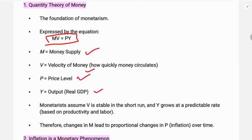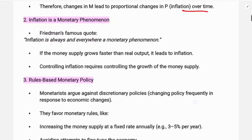Monetarists assume V — velocity of money — is stable and constant in the short run, and Y grows at a predictable, constant rate. Therefore, a change in M (money supply) leads to a proportional change in price level or inflation over time. If money supply increases, price level increases accordingly, but only if the monetary policy is systematic; otherwise inflation will not rise in a systematic way. This is the first feature: the quantity theory of money as given by the monetarists.